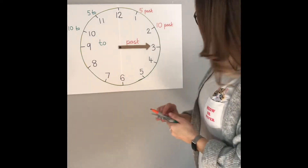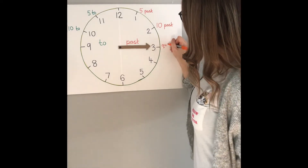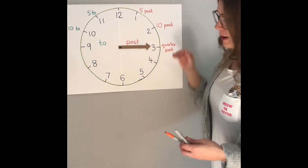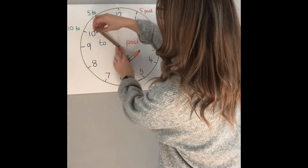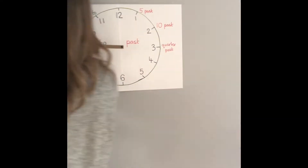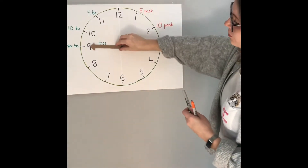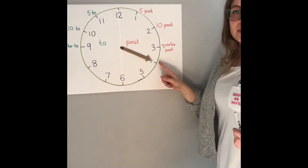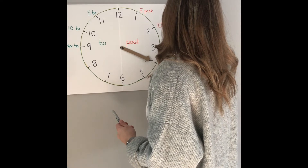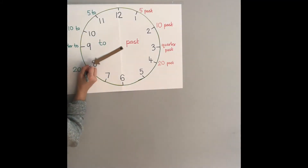This one is not fifteen minutes past — it's quarter past, but it's the same as fifteen minutes. So on this side, if the other side is quarter past and it's pointing to the nine, it must be quarter to. So if it's pointing here on the past side to the four, it's twenty past — twenty minutes past the hour. So over here it must be twenty to.